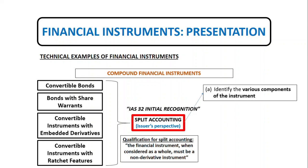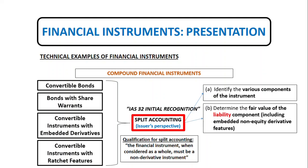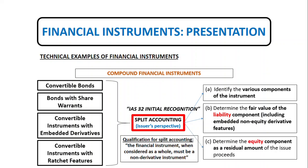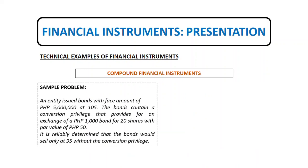After confirming the financial instrument is a non-derivative in its entirety, we proceed with the steps for split accounting. First, identify the various components of the instrument. Then, determine the fair value of the liability component, including the embedded non-equity derivative features, in the case of convertible instruments with embedded derivatives. Finally, determine the equity component as a residual amount of the issue proceeds.